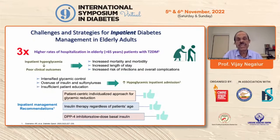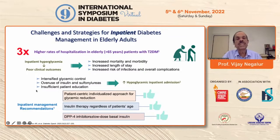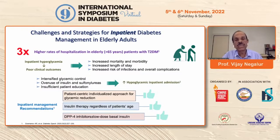Elderly patients have three times more risk of hospital admission, either for management of hyperglycemia — causing increased mortality, morbidity, increased length of stay, and risk of infection — or because of hypoglycemia due to intensified glycemic control, overuse of insulin and sulfonylureas, and insufficient patient education. Patient-centric individualization is important. Insulin therapy remains the mainstay of therapy in hospitalized patients, and agents like degludec could be used in some of these patients with basal insulin.